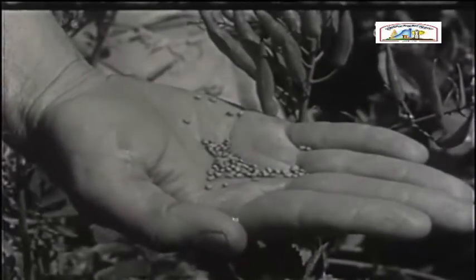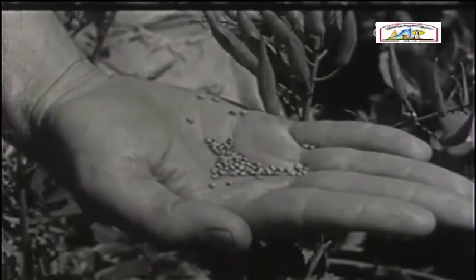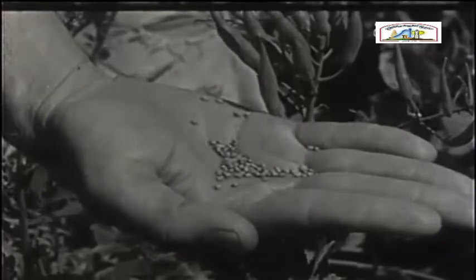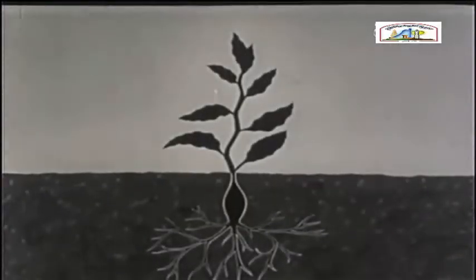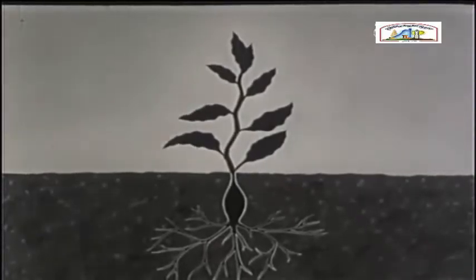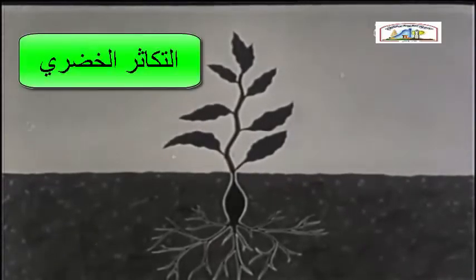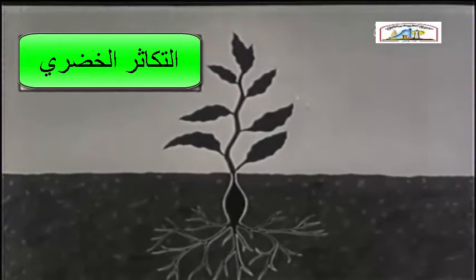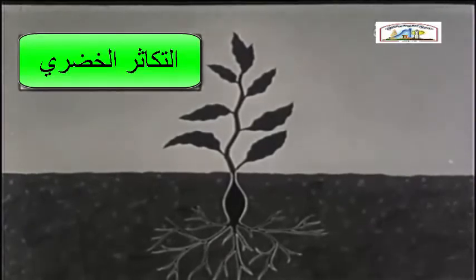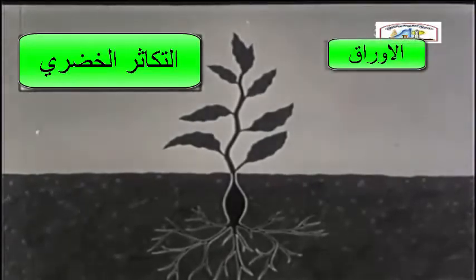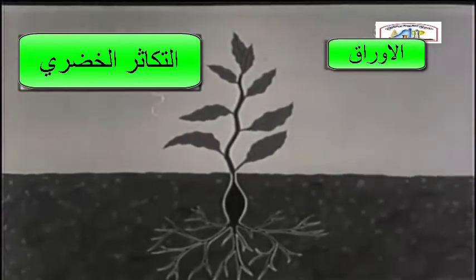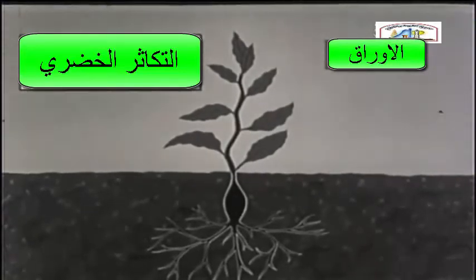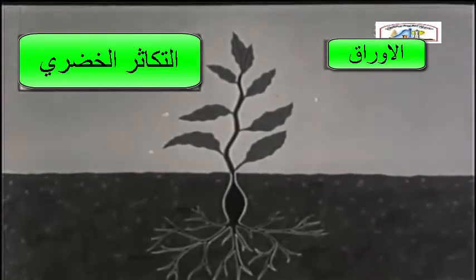But seeds are not the only means of reproduction for green plants. The leaves, stems, and roots of some plants can also be used for a special kind of reproduction called vegetative reproduction. Let's begin with leaves and see how in some plants the leaves can be used for vegetative reproduction.